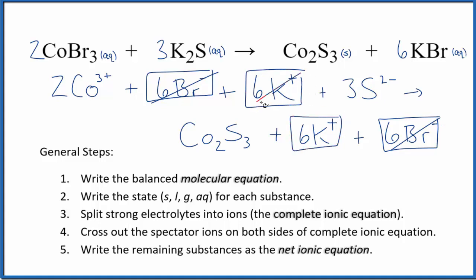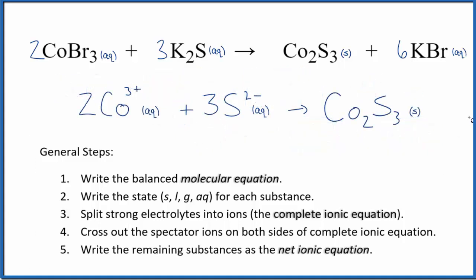What's left, that's the net ionic equation for CoBr₃ plus K₂S. I'll clean this up and write the states. We'll have our net ionic equation. So this is the balanced net ionic equation for cobalt(III) bromide plus potassium sulfide.